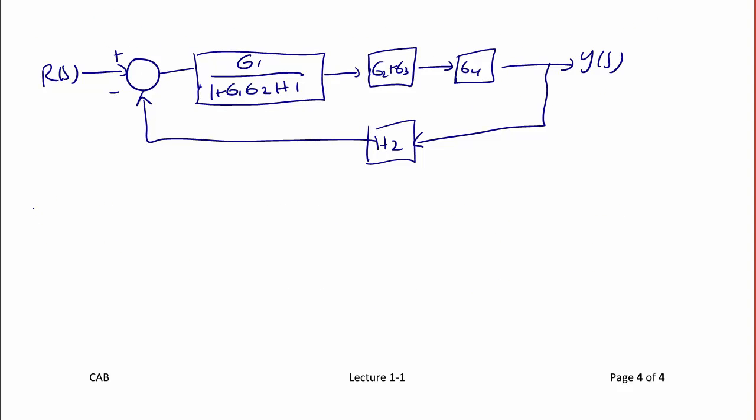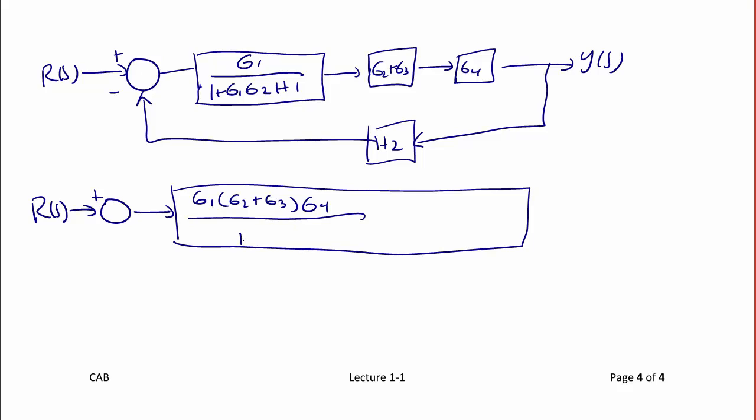The next step in the simplification would be to multiply all of the feed forward gains together. So here we'll have R(s) into the summer, and now we have one big box that has g1 times the quantity g2 plus g3 times g4 over 1